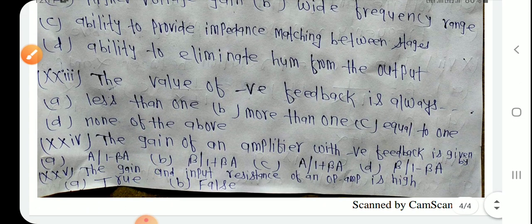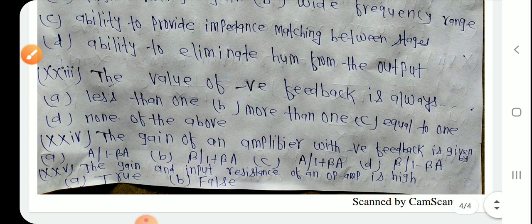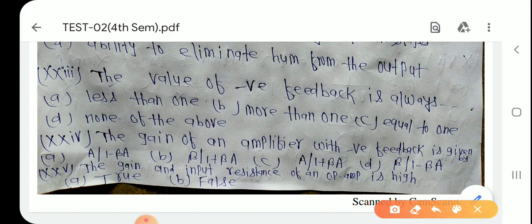Question number 22: The value of negative feedback is always less than 1 — negative feedback का gain 1 से कम होता है।